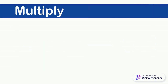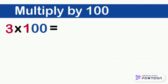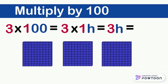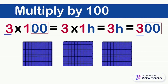Now we want to know how to multiply a number by 100. What is 3 times 100 equal to? We know that the number 100 equals 1 block of 100. So 3 times 100 is 3 times 1 block of 100, which is equal to 3 blocks of 100, which means 300. So we notice that when we multiplied 3 by 100, we wrote 3, then we put two 0s to the right of 3.